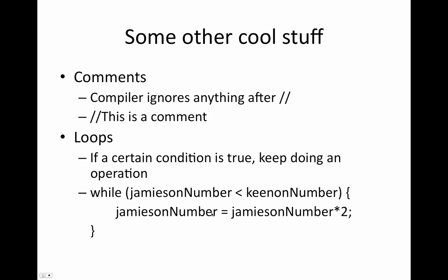And you actually will often run into cases where it will actually keep doing that forever. Like imagine Jamison number is equal to zero, right? And so you say, while Jamison number is less than Kenan number, which is some non-zero number like three, Jamison number equals Jamison number times two, but zero times two is still zero.